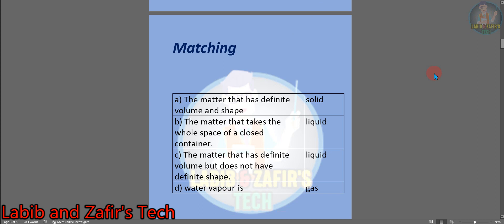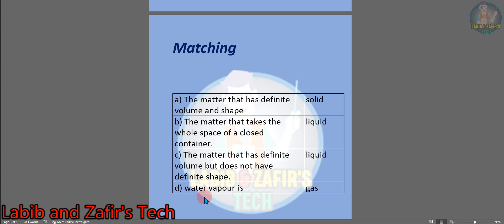Here are some matching exercises given in your exercise book. A: the matter that has definite volume and shape — solid. B: the matter that takes the whole space of a closed container — gas. C: the matter that has definite volume but does not have definite shape — liquid. Water vapor is gas.